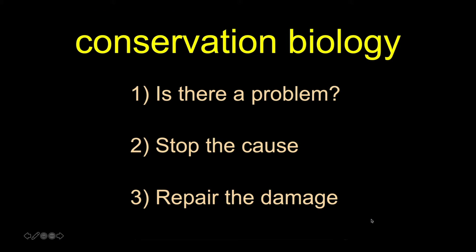As a conservation biologist, my work breaks down into three different parts. First, I ask: is there a problem? If there is a problem, I try to figure out what caused it, and then work on stopping that cause. Once we've stopped the bleeding — once we've stopped the thing causing the issue — oftentimes we have damage: fewer animals, pollution in the water, and so on. So then I work on trying to repair that damage. All three parts are different elements that conservation biology addresses.